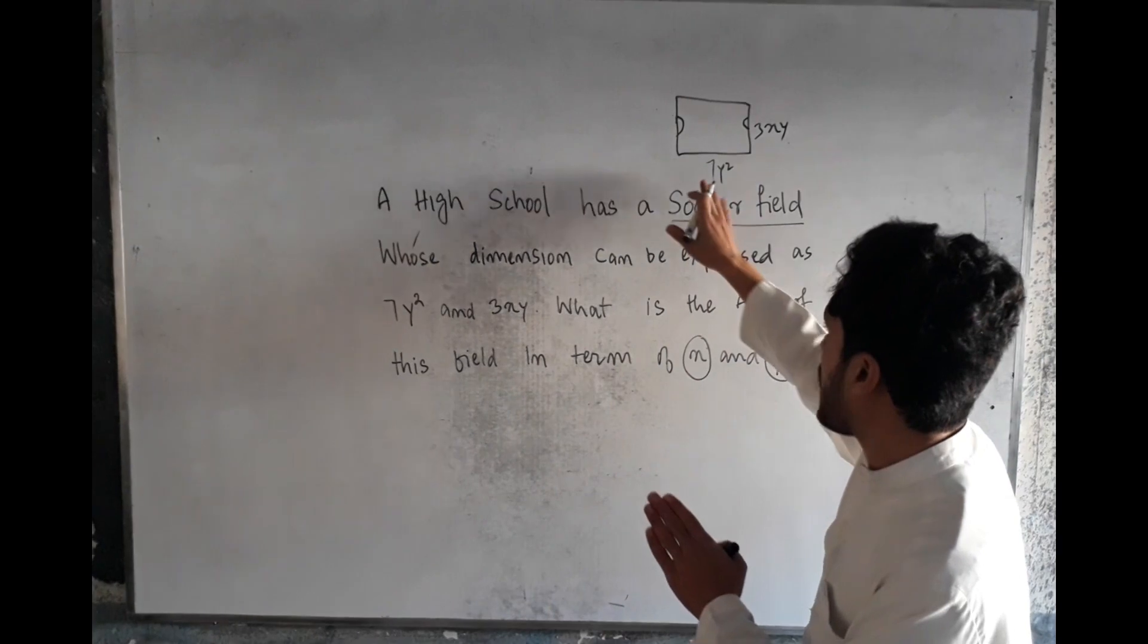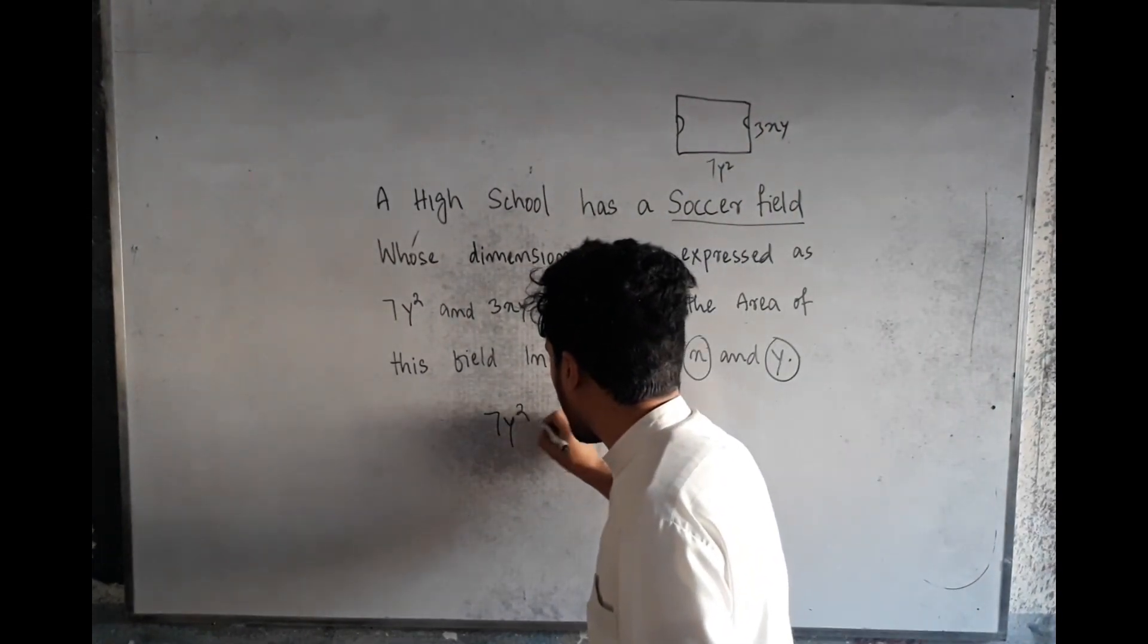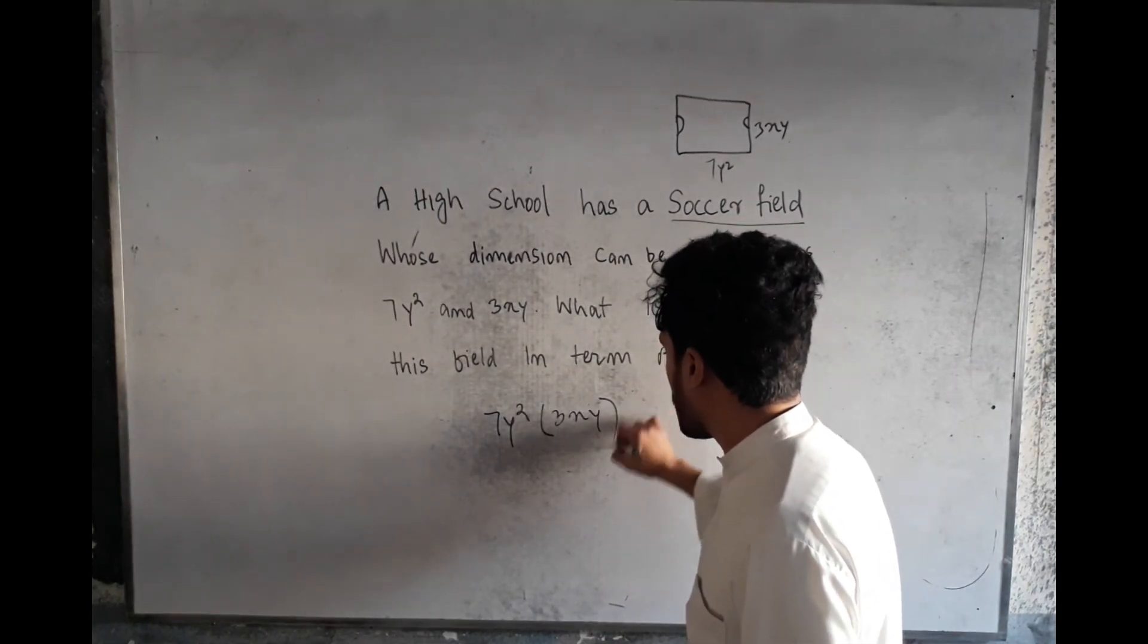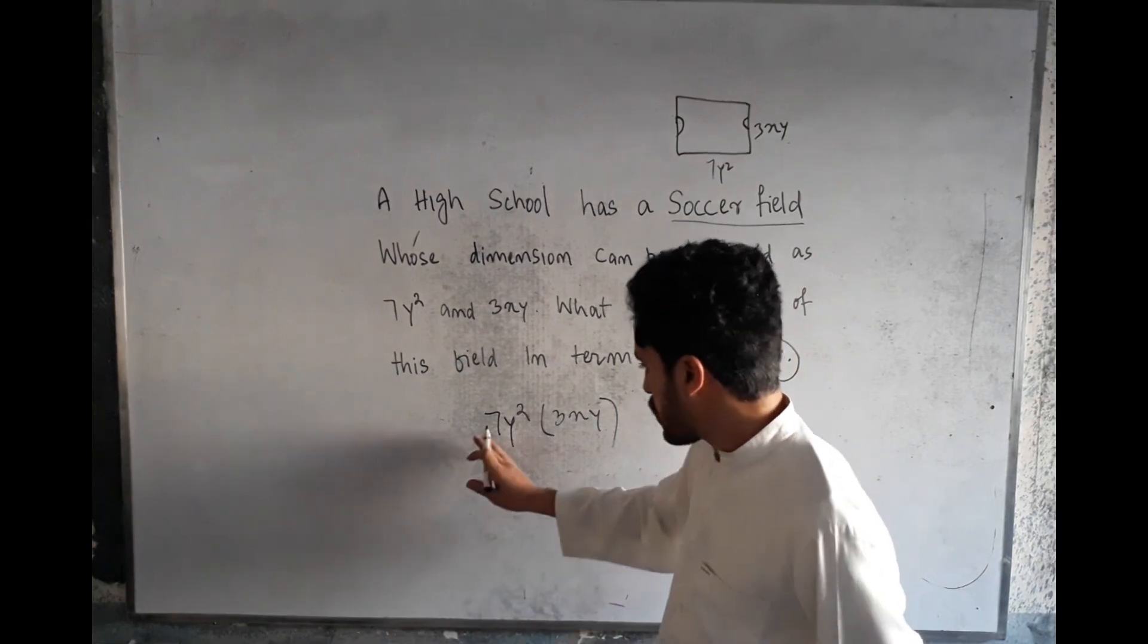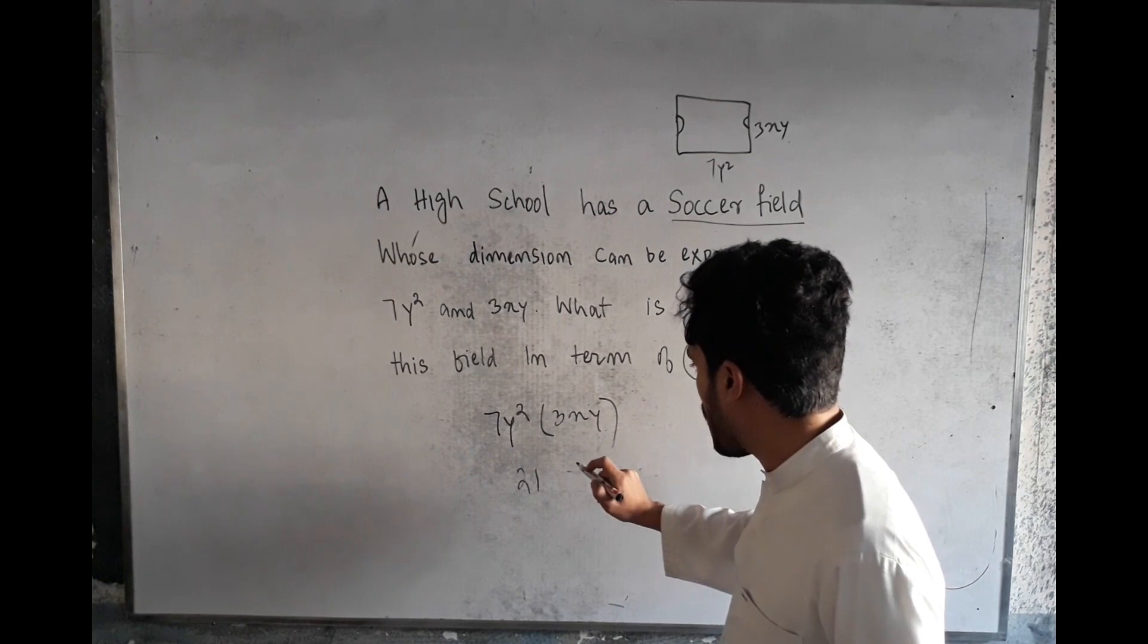If you multiply this, 7 multiplied by 3 equals 21. Y² and y becomes y³. For x, there is no other x here, so it's just x. Therefore, it's 21y³x.